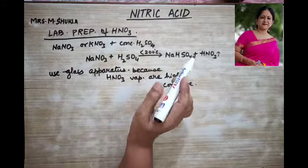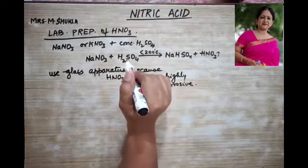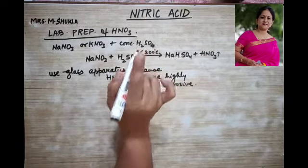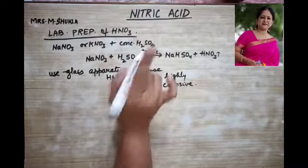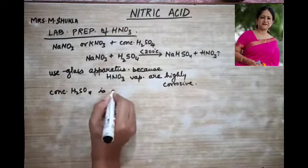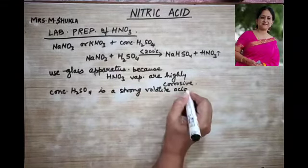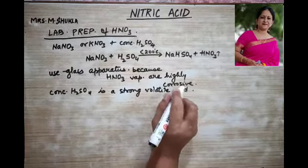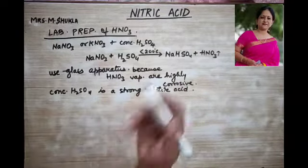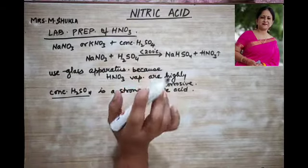An important point: why do we use concentrated H2SO4 and not concentrated HCl? Because concentrated H2SO4 is a strong, non-volatile acid, and it is capable of displacing and forming more of the volatile nitric acid. Therefore we use concentrated sulfuric acid.